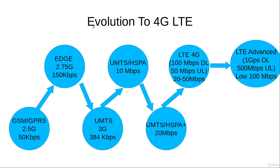First, we discuss the evolution of mobile communication systems from 1G to 4G LTE. The 'G' stands for generation, so 4G means the fourth generation of mobile communication systems. This evolution from 1G to 4G was primarily driven by the need for more and more data rates for users of mobile systems.